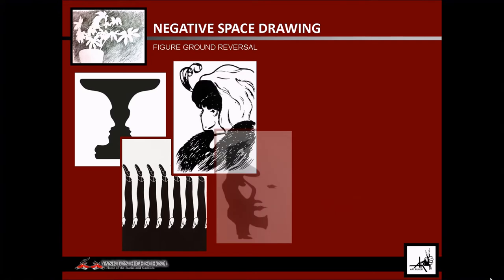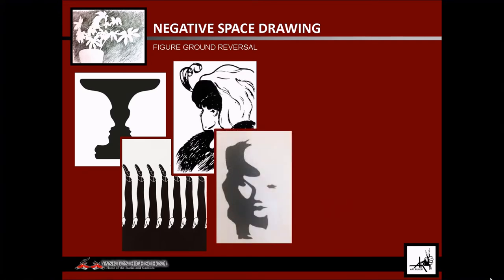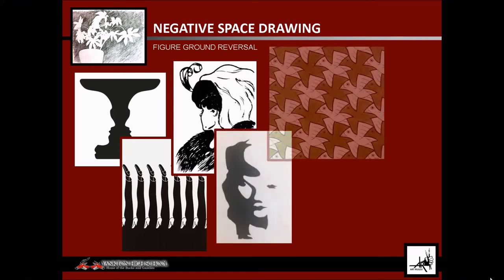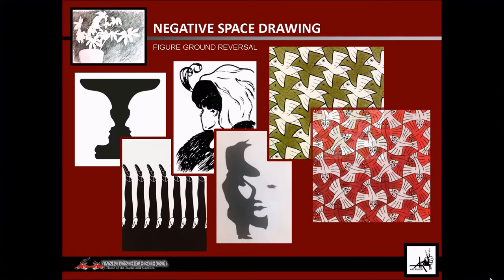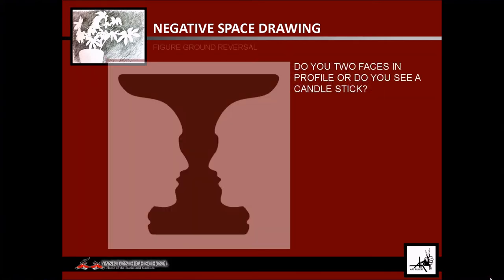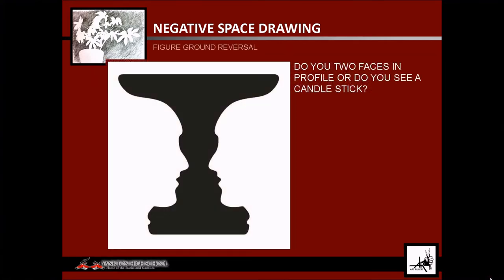This approach relates to figure-ground reversal images. Research indicates that at any given moment you see one or the other — your mind can switch back and forth so quickly that it seems like you see both at the same time, but you don't. Your brain filters out the perceived negative space as irrelevant and ignores it.